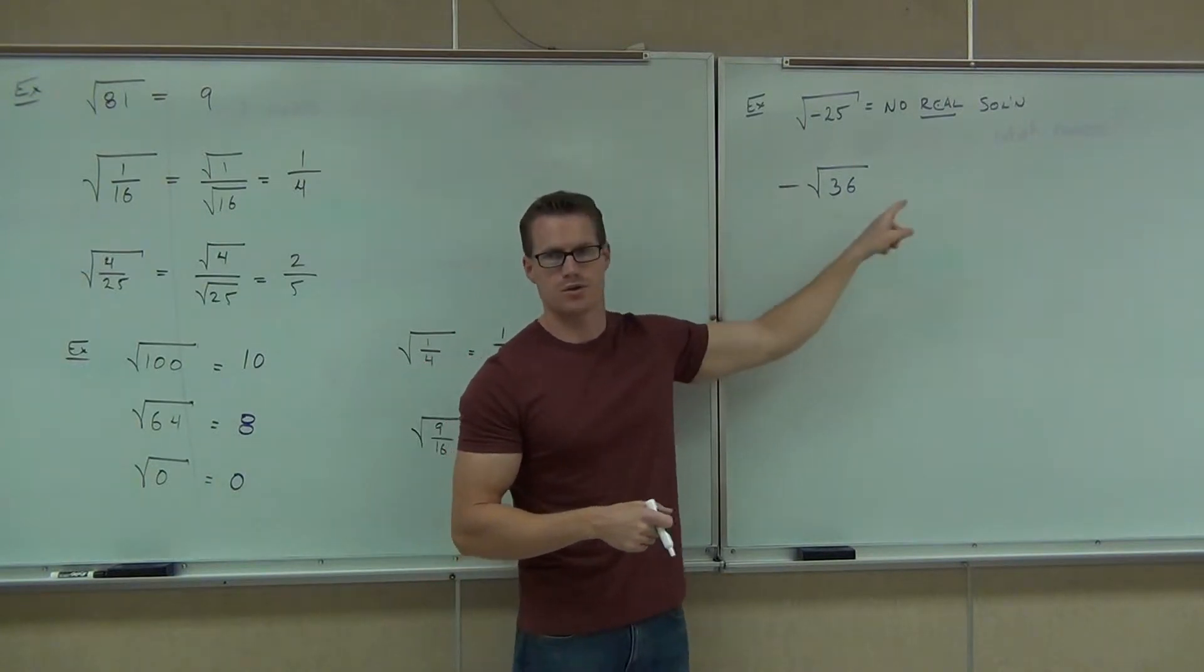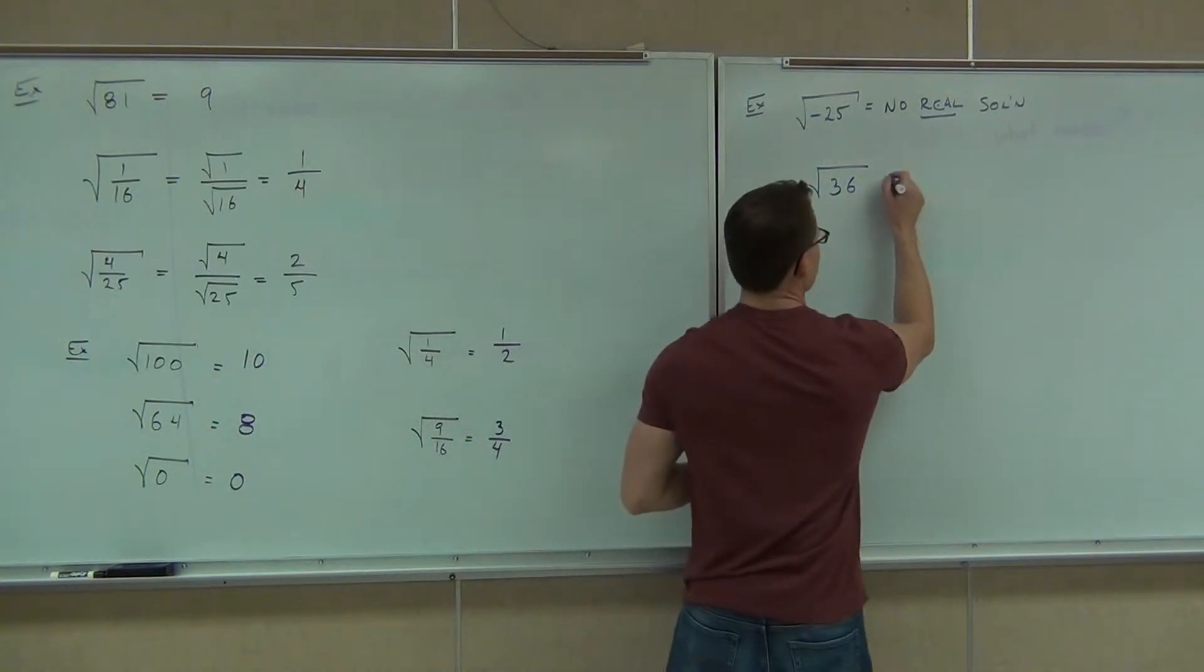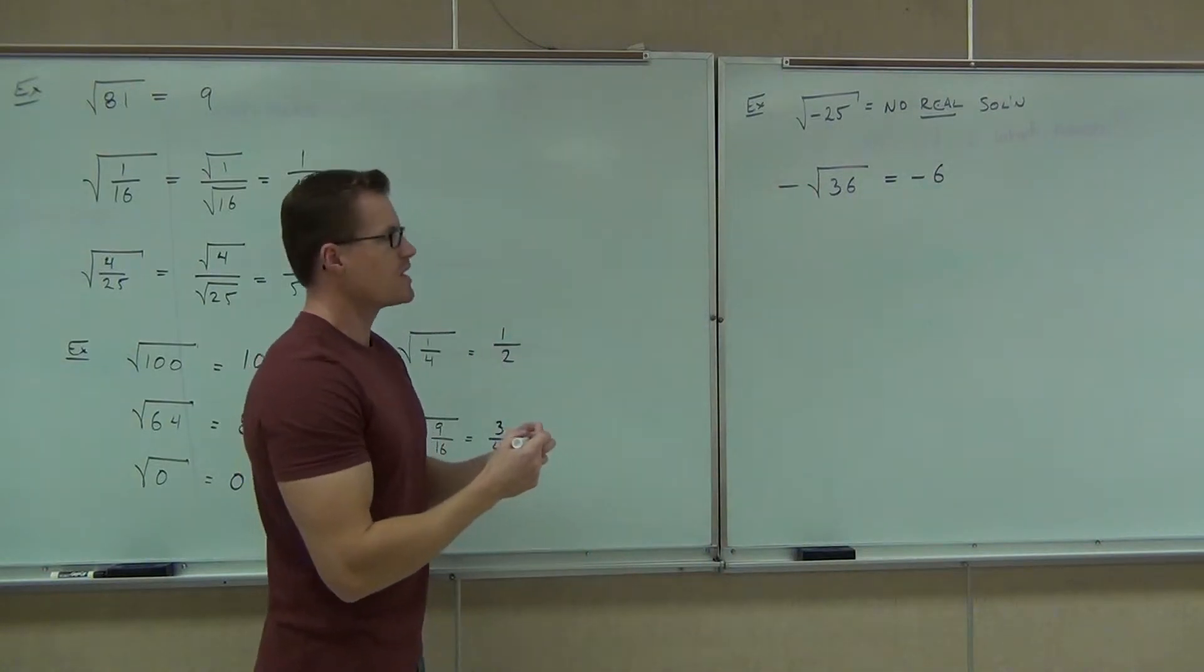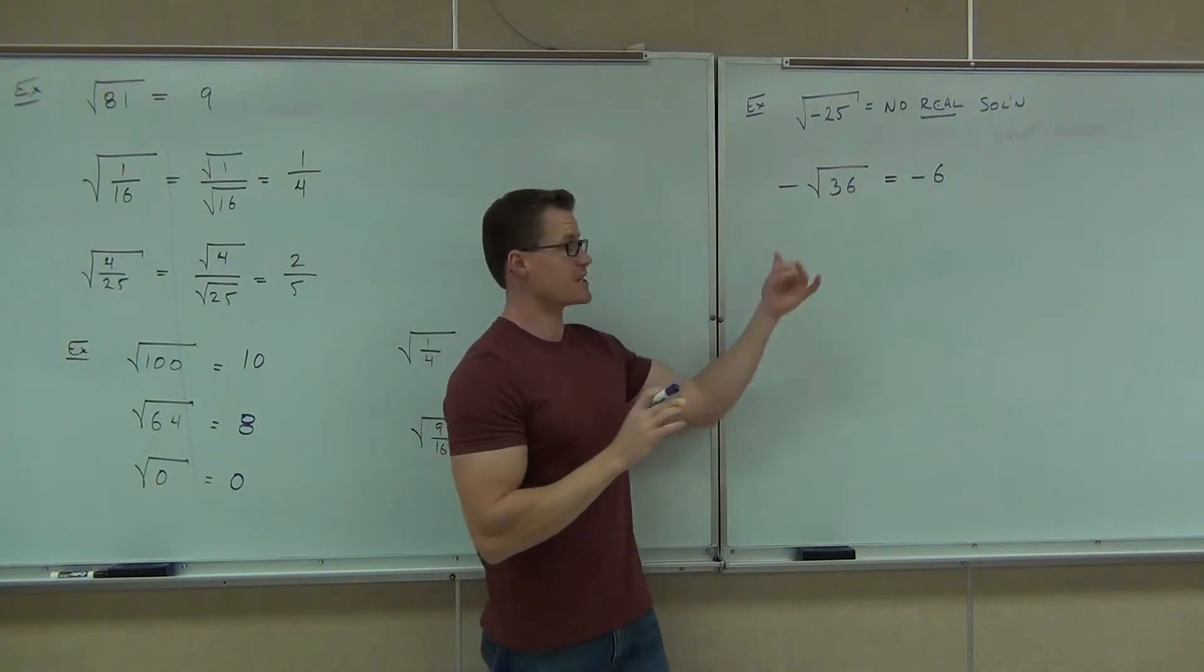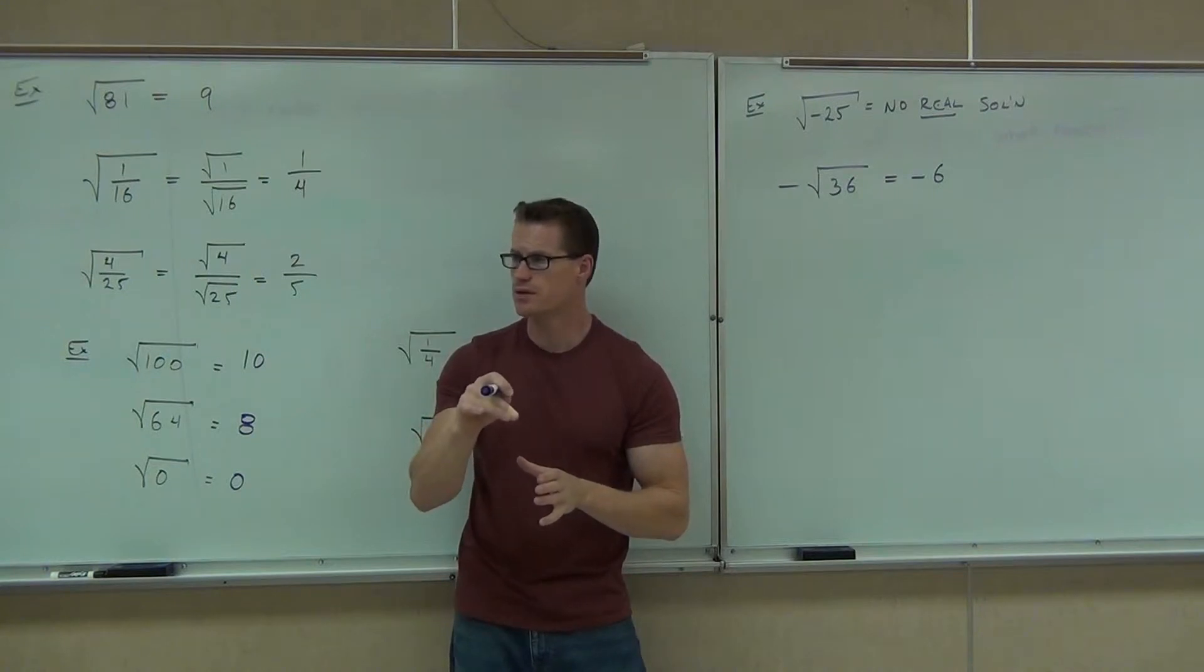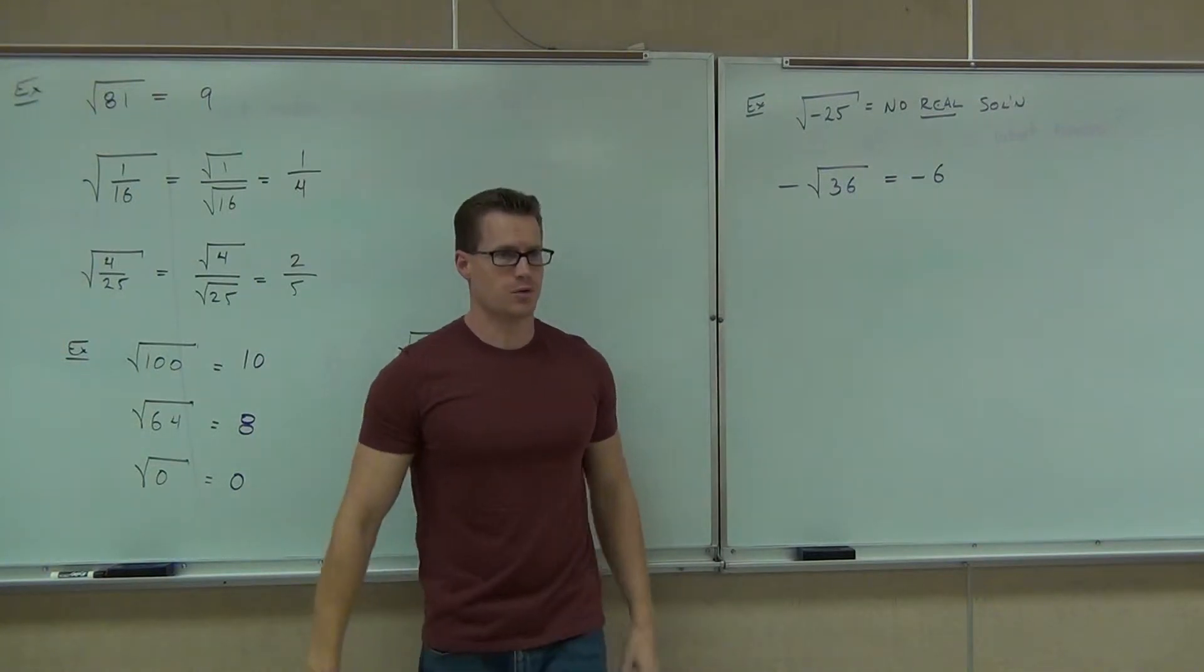And then take the opposite of that. So this is the opposite of the square root of 36. How much is this going to be? Negative of six. Yeah. Now, that's true. If the negative is inside your square root, there's no real solution. If the negative is outside your square root, that's okay. You can take the square root and then just make your answer negative.